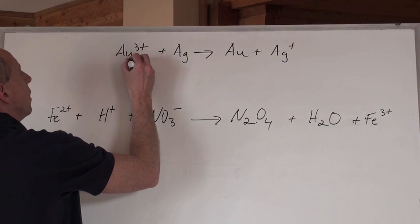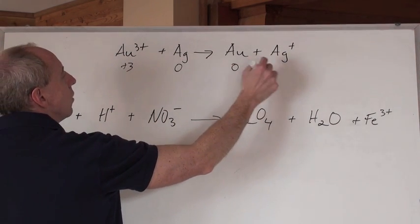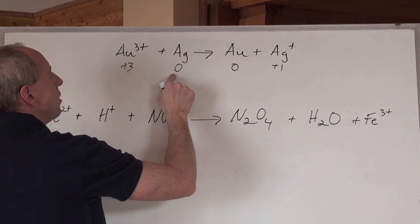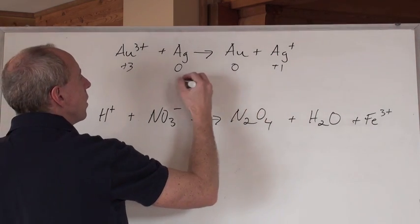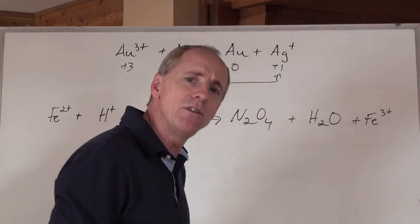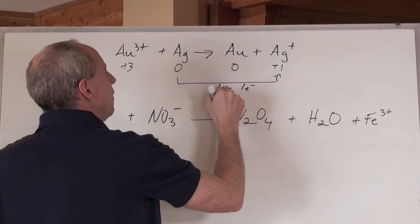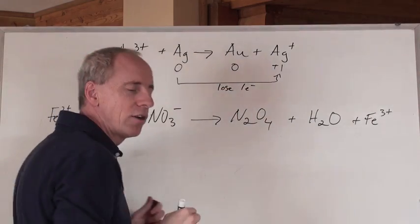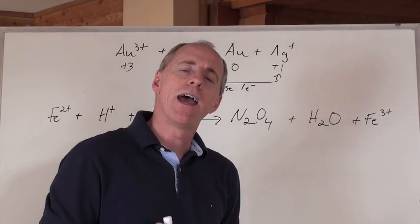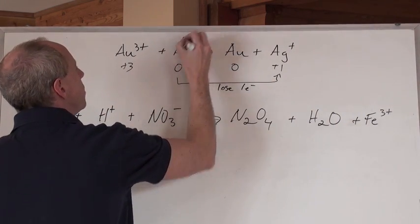Au3+ is plus 3. Element is 0. Element, 0. Ag+ is plus 1. What did the Ag do? Went from 0 to plus 1. If it goes from 0 to plus 1, that is becoming more positive. That means you're losing negatives. That's lose one electron. If you're losing electrons, that means you're undergoing oxidation. And oxidation means that the silver is the reducing agent.